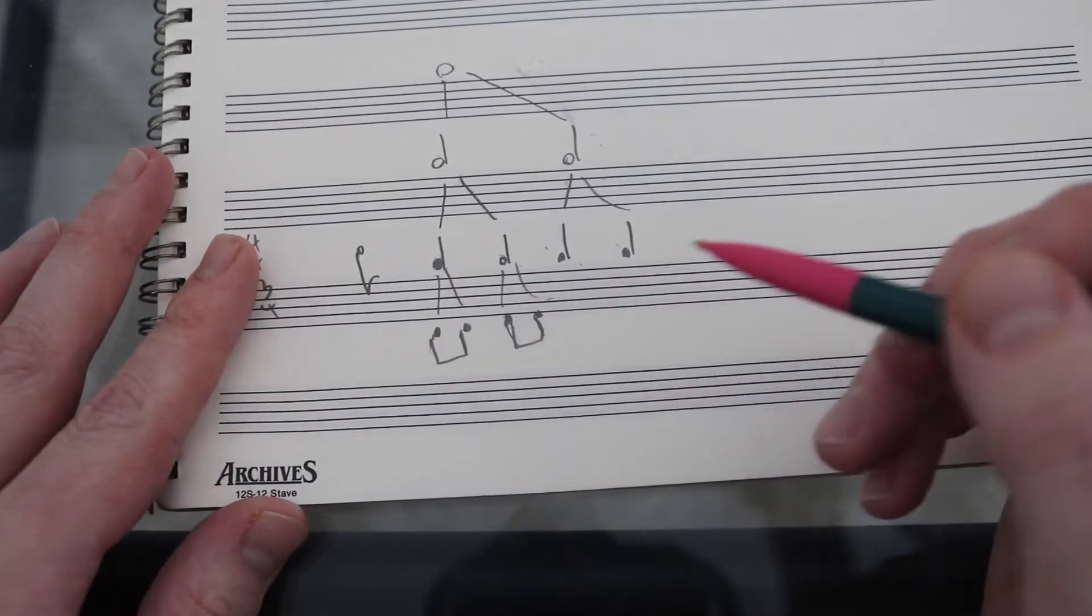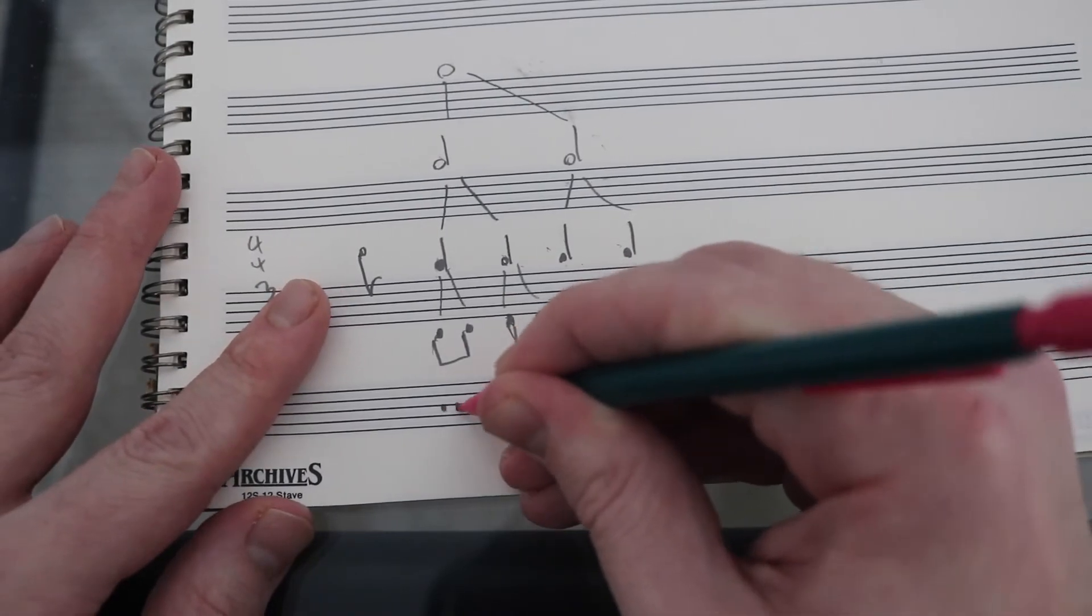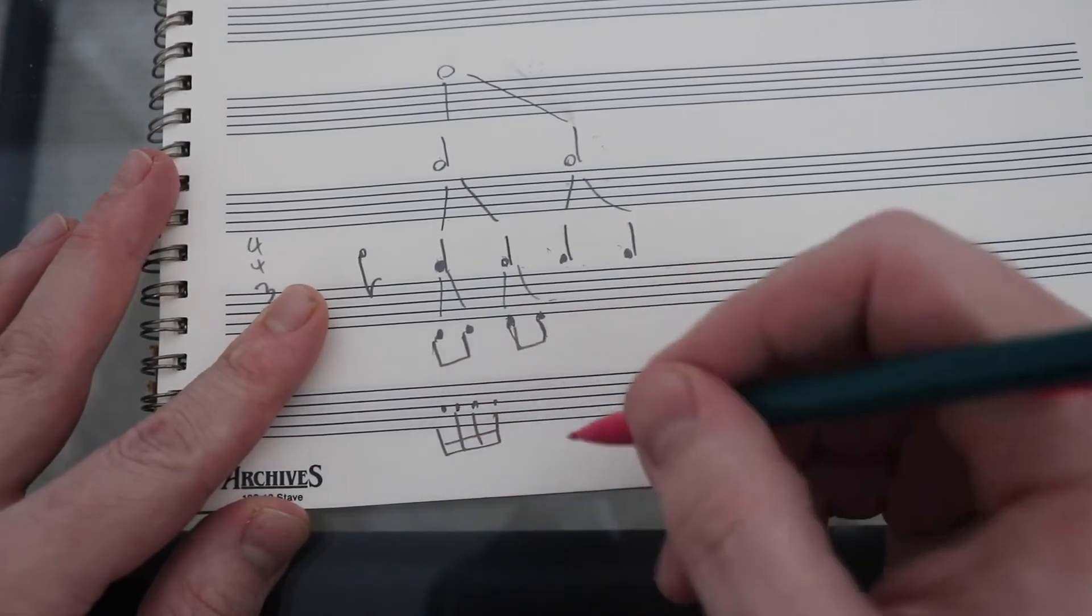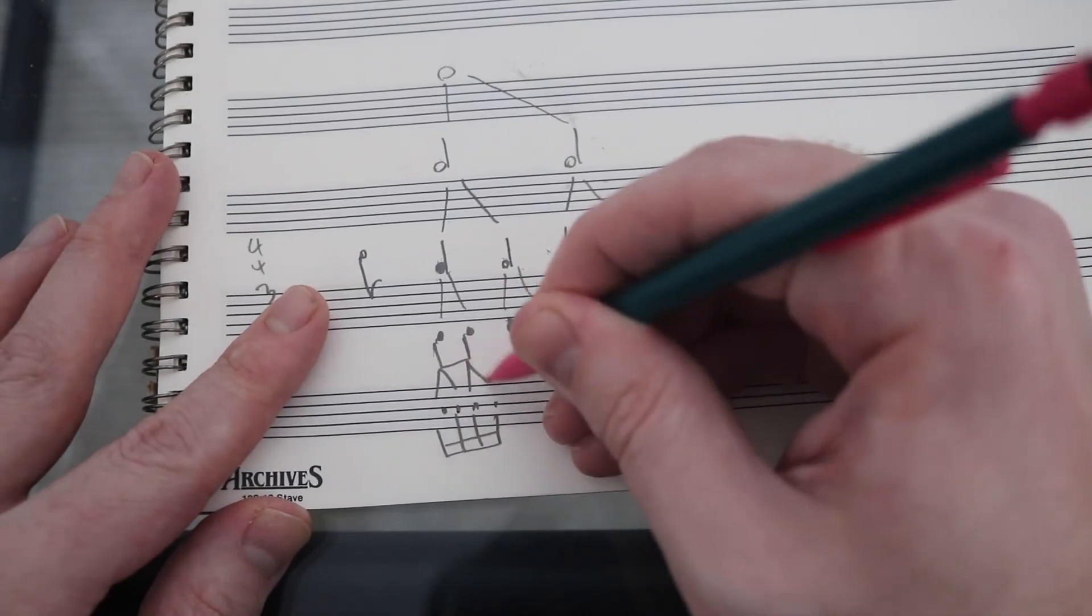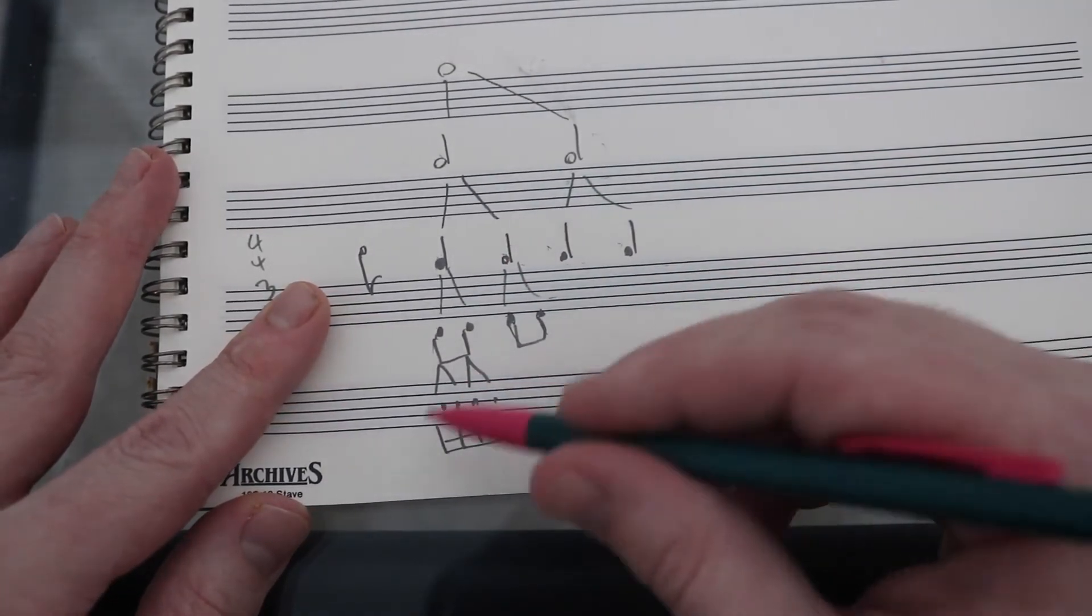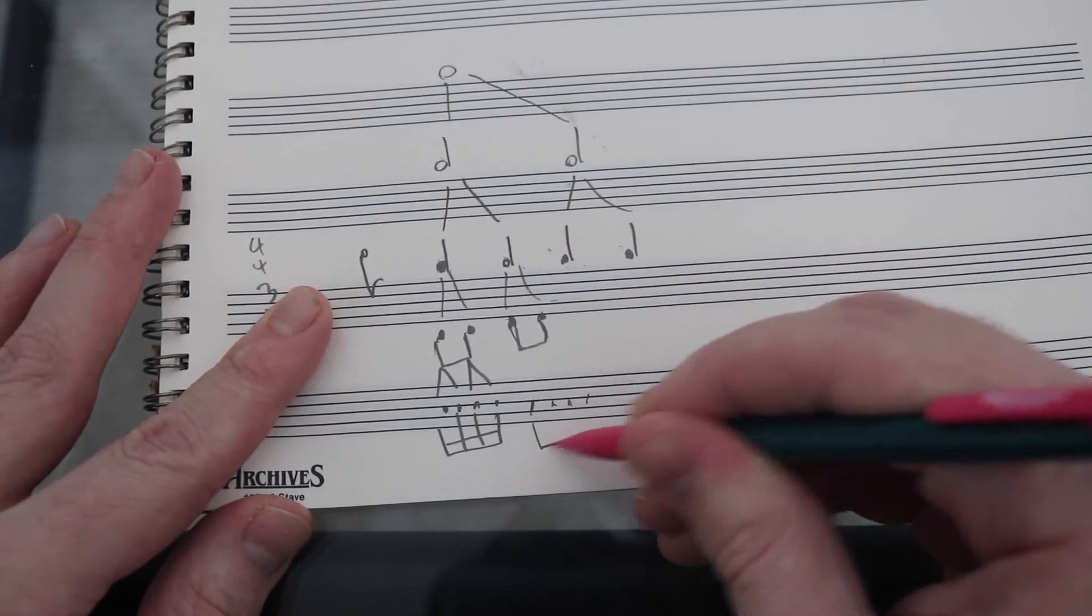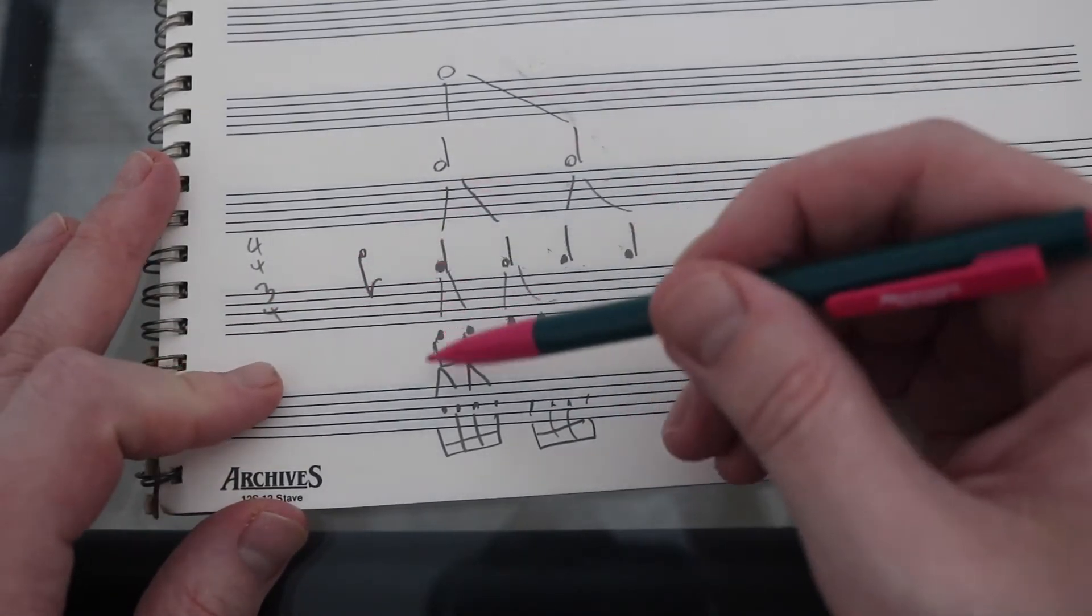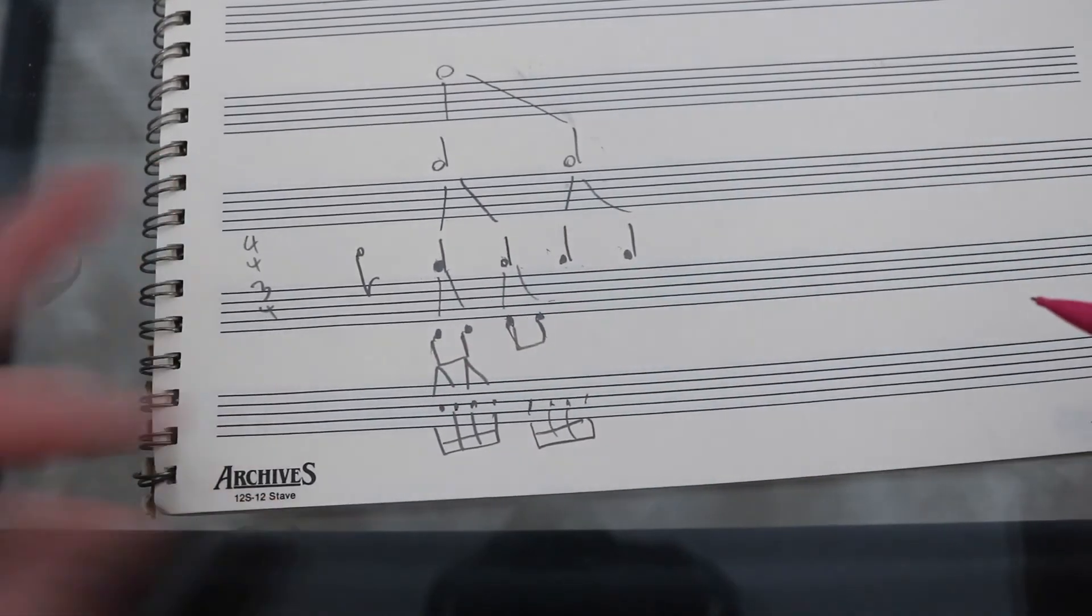What if I want to get smaller than an eighth note? Well, notationally, it's pretty easy. I just make an extra beam. So, there are two sixteenth notes for every eighth note. There are four sixteenth notes for every quarter note, right? Of course, I wouldn't actually draw these little upside-down Vs. This is just to show you how many can fit inside of there.